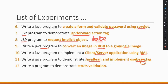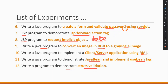The eleventh program asks us to write a Java program to implement Java Beans and the useBean tag. A Java Bean is a normal Java class that follows certain conventions, which we will see later. Program 12 asks us to demonstrate Struts validation — similar to what we did in program 6 with username and password validation using Servlets, but now using the Java Struts framework.